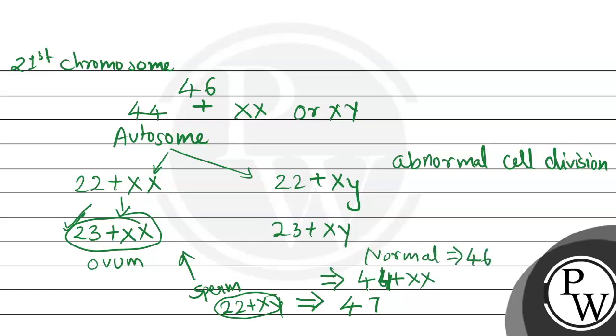I hope you understood. So what does 44 plus XX mean? It means 44 autosomes and XX is the sex chromosome. Similarly, if we make this with the faulty chromosome, it will be 45 plus XX condition or XY condition. So the extra chromosome is showing the 47 condition.